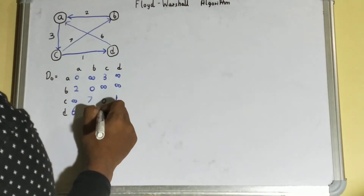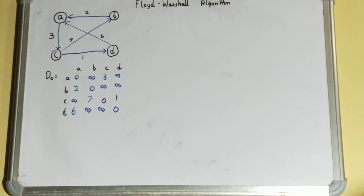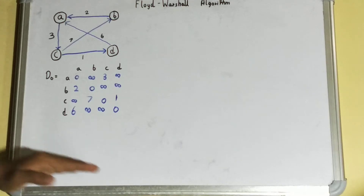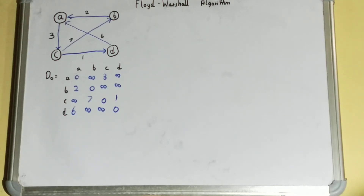Now we have our D0 matrix. The question is: how many D matrices do we need to find — D1, D2, D3, how many? It depends on the number of vertices. If you have four vertices you go till D4, if you have five you go till D5, and six vertices means till D6. In this case we have four vertices so we'll find up to D4.